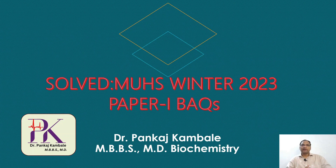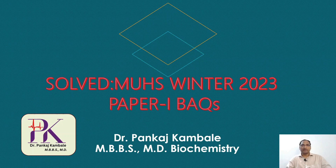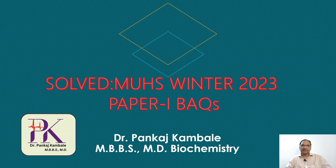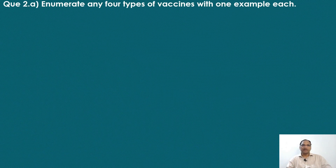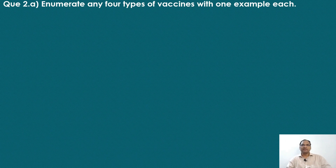Hello and welcome everyone. In this video, I have provided solutions to the recently conducted MUHS winter 2023 paper 1 brief answer questions. So let's see the first question: enumerate any four types of vaccines with one example each.